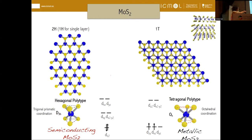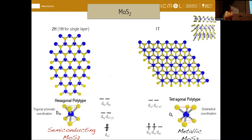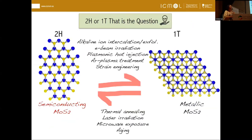However, the 1T phase, with octahedral coordination of molybdenum, has a closed band gap — metallic behavior — meaning it's much more conductive. For catalytic applications, for example, it's much more convenient to have the 1T phase. Therefore, it's important to control or be able to change from one phase to the other — that is called phase engineering. There are several different techniques to do this, but most of them are not reversible.